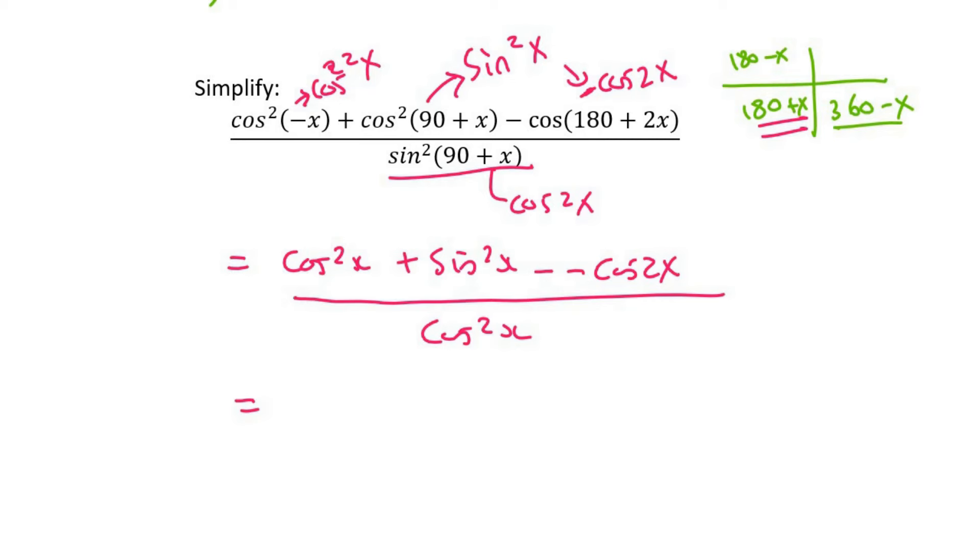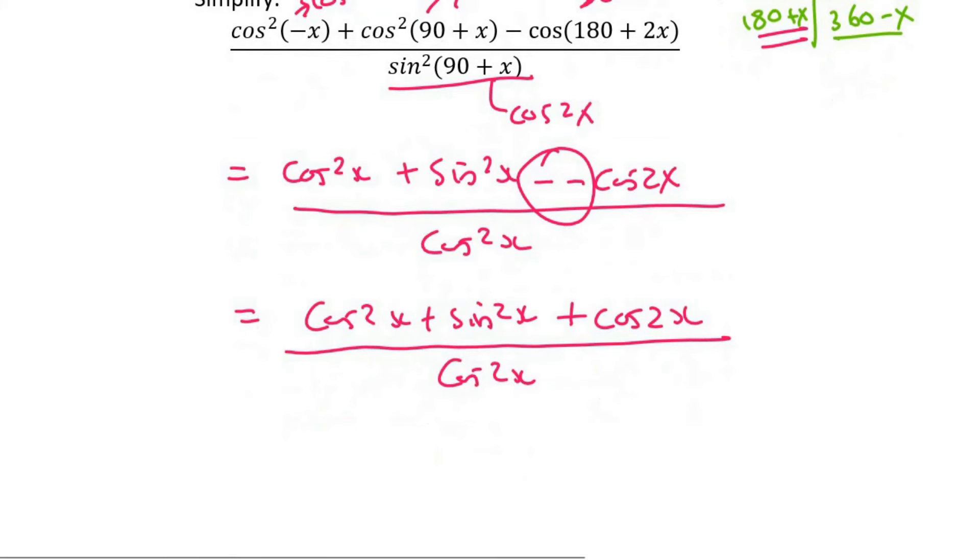So what we end up with then is cos squared x plus sin squared x. And then this will obviously turn into a plus. There we go. And then cos squared x.